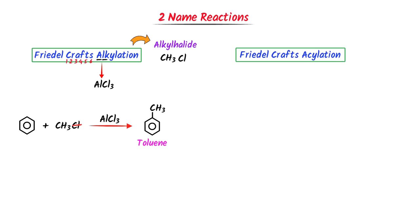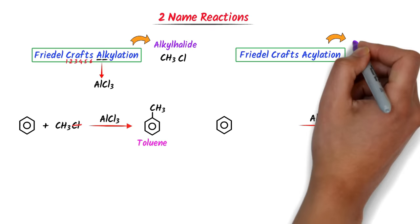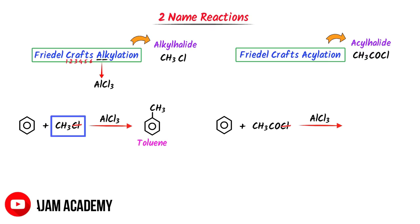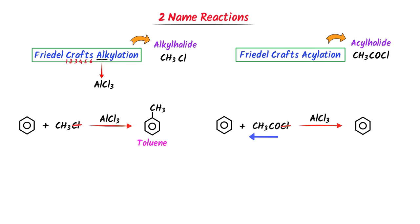In the case of Friedel-Crafts acylation, I take benzene and AlCl3. The word acylation means acyl halide like CH3COCl. I cut Cl, take benzene, and write CO then CH3 (from back to front). I get acetophenone. This is the Friedel-Crafts acylation.